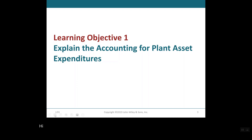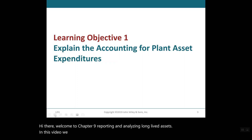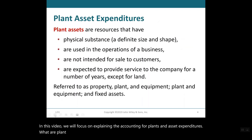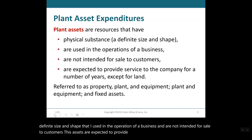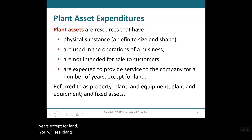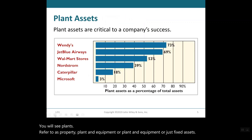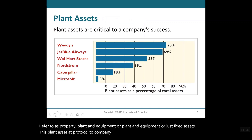Welcome to Chapter 9: Reporting and Analyzing Long-Lived Assets. In this video, we will focus on explaining the accounting for plant asset expenditures. Plant assets are resources that have physical substance, a definite size and shape, that are used in the operation of a business and are not intended for sale to customers. These assets are expected to provide services to the company for a number of years. Plant assets are crucial to a company's success because they determine the company's capability, capacity, and its ability to satisfy customers.